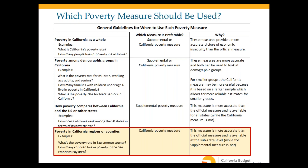To look at poverty in California's regions or counties, you must use the California Poverty Measure, since the supplemental measure is only available at the national or state level — the CPM is the only measure that allows sub-state analysis.